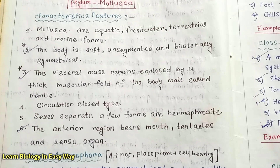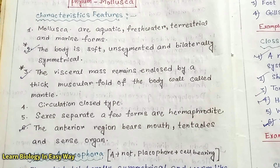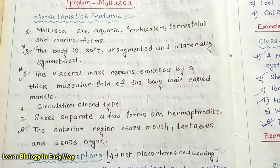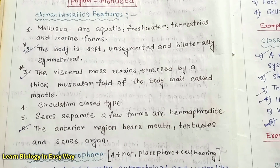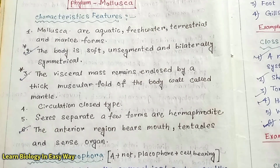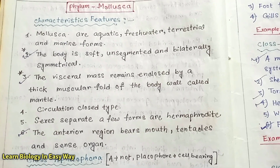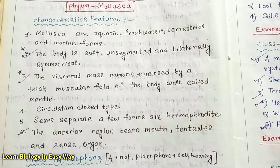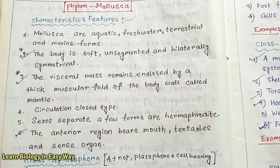Circulation is open type. Sexes are separate; a few forms are hermaphrodite. The anterior region bears mouth, tentacles and sense organs.